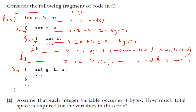Then when you enter into block four, we are allocating memory for three more variables g, h and i. So total memory is 12 plus 12, which is equal to 24 bytes.